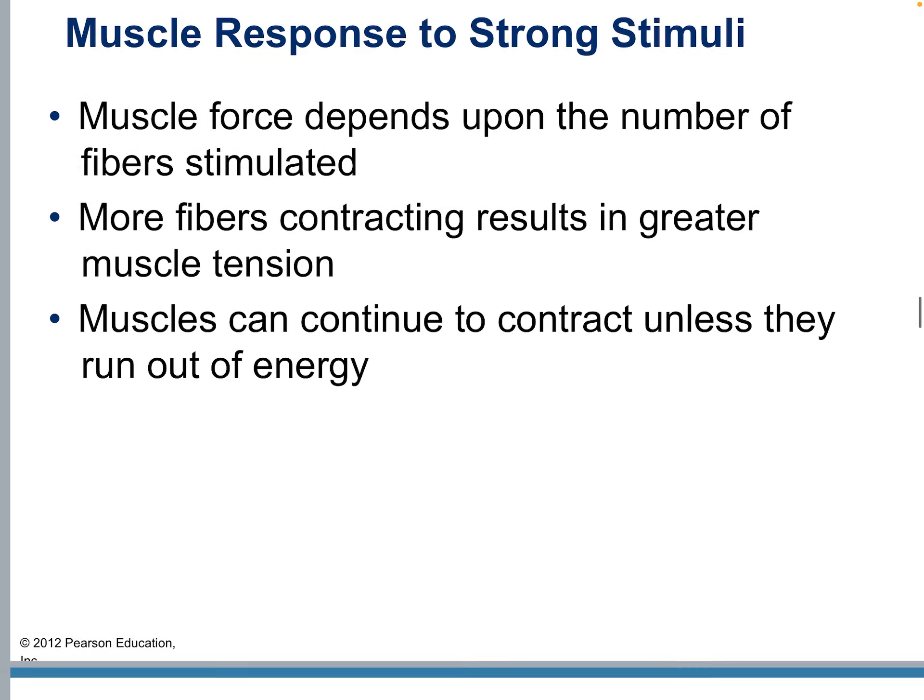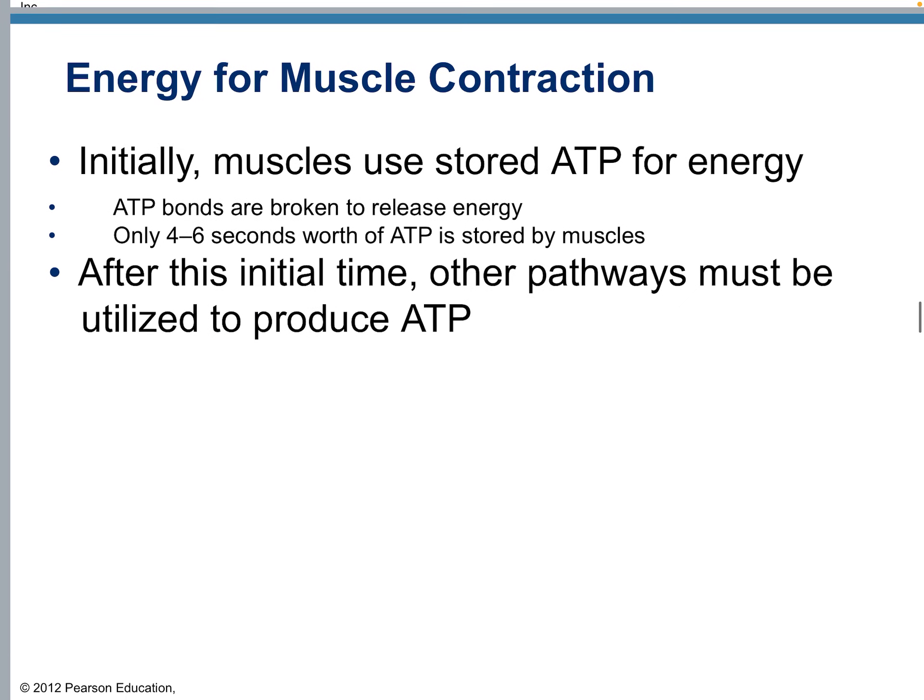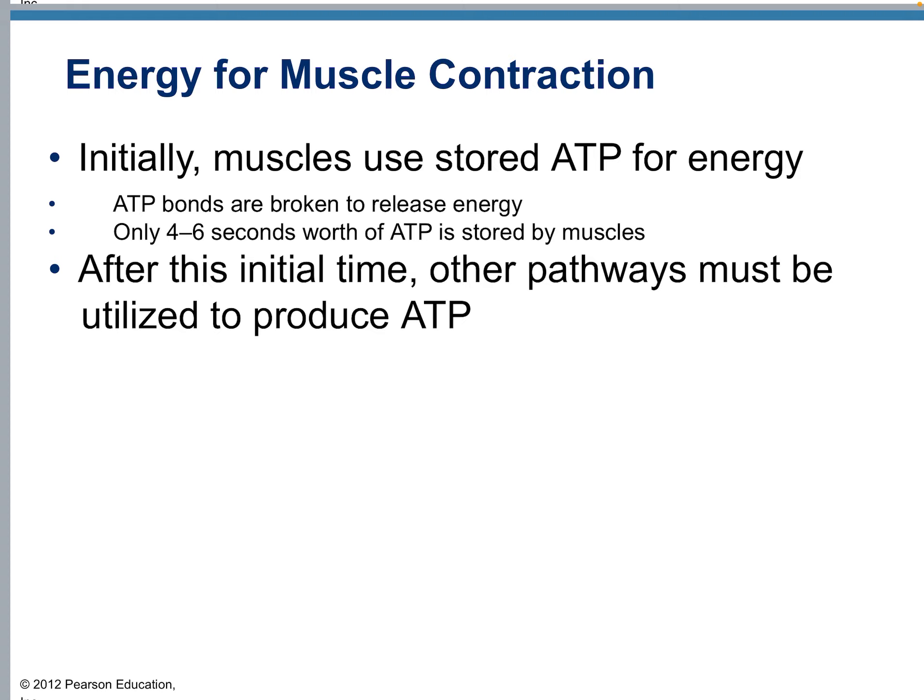So what do we use for muscle energy? First, muscles will use stored ATP. However, there's only about four to six seconds worth of ATP stored in your muscles. If you're sprinting across a football field, after about four to six seconds your muscles run out of stored ATP — they've used up their immediate provisions of energy. After that time, other pathways must be utilized to produce ATP.